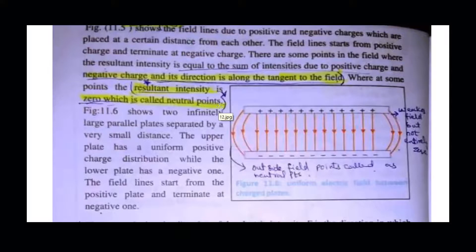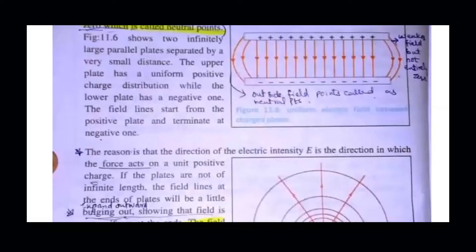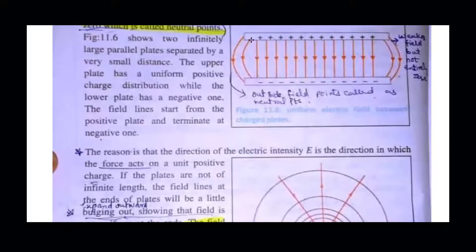Now we consider the second figure: the uniform parallel field between two plates of a capacitor. The charge is uniformly distributed over the positive plate and uniformly over the negative plate. The electric field lines between the plates are very uniform and strong at the central portion. The field originates from the positive plate and terminates at the negative plate. At the ends of the capacitor, the lines bulge outward due to the weaker field — this is called fringing.